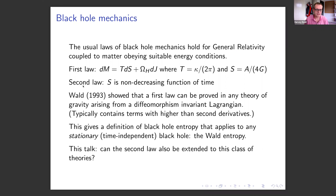The second law of black hole mechanics is the famous Hawking area theorem, which says that the area of the event horizon and therefore the Bekenstein-Hawking entropy is a non-decreasing function of time. The standard example is a black hole merger, where the area of the final black hole is greater than the sum of the areas of the two initial black holes.